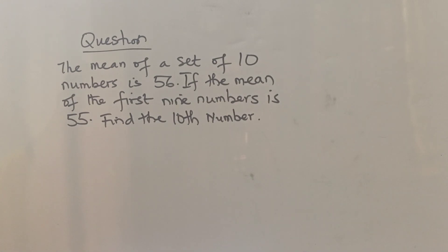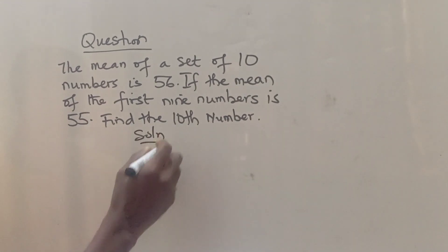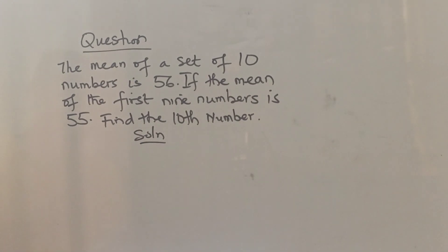So the first thing we want to do with this kind of problem is interpret it. I'm sure we know what mean is. When we say mean, you are summing the frequency multiplied by the numbers and the summation of the frequency. With that idea, we can see the mean of a set of 10 numbers. So if we have a set of 10 numbers, what does it mean?